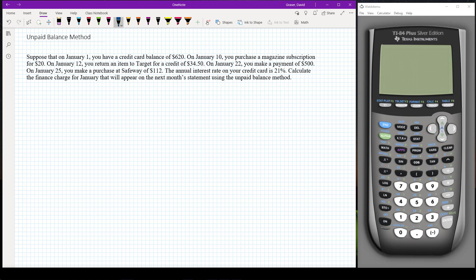So suppose that on January 1st you have a credit card balance of six hundred and twenty dollars. On January 10th you purchase a magazine subscription for twenty dollars. On January 12th you return an item to Target for a credit of thirty four dollars and fifty cents. On January 22nd you make a payment of five hundred dollars. On January 25th you make a purchase at Safeway of a hundred and twelve dollars.